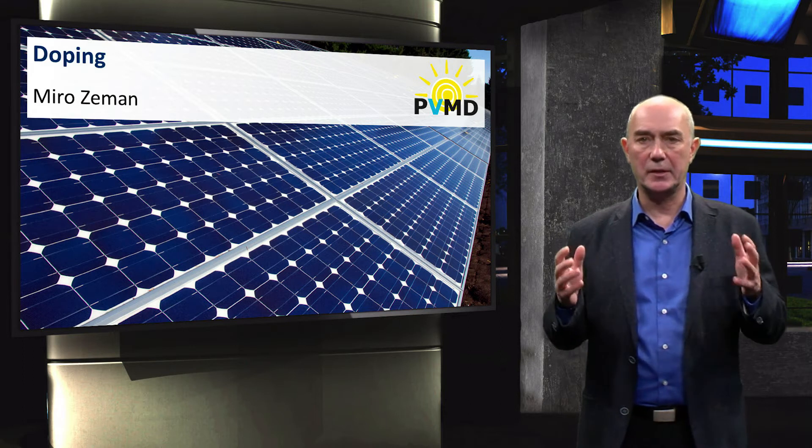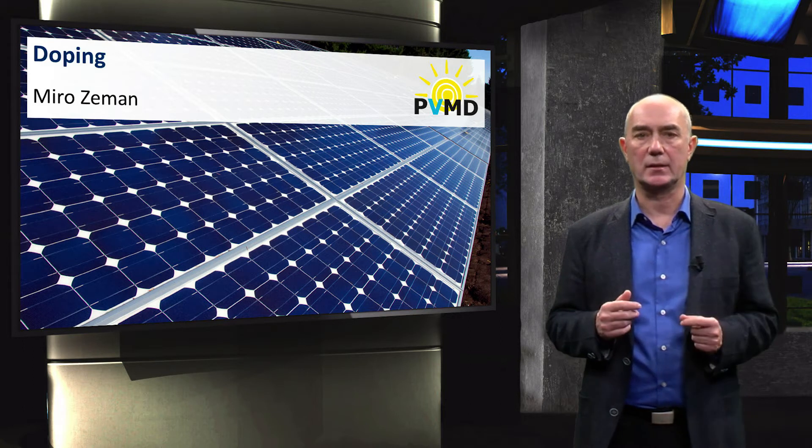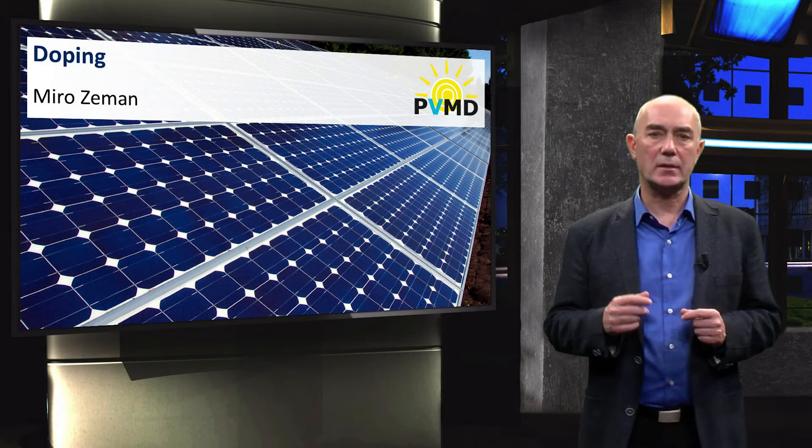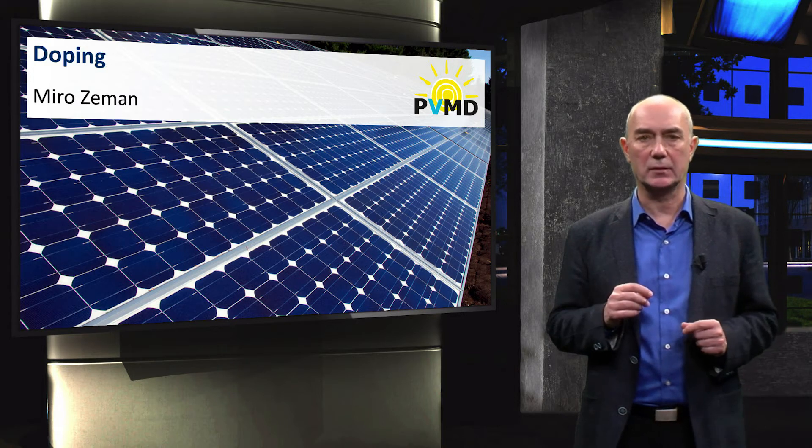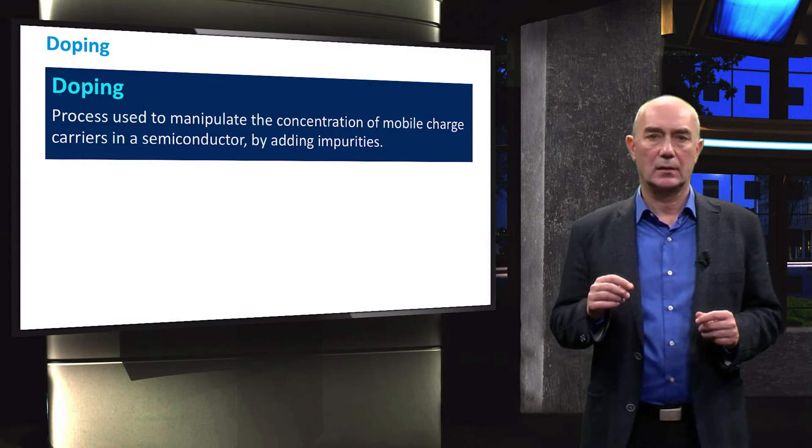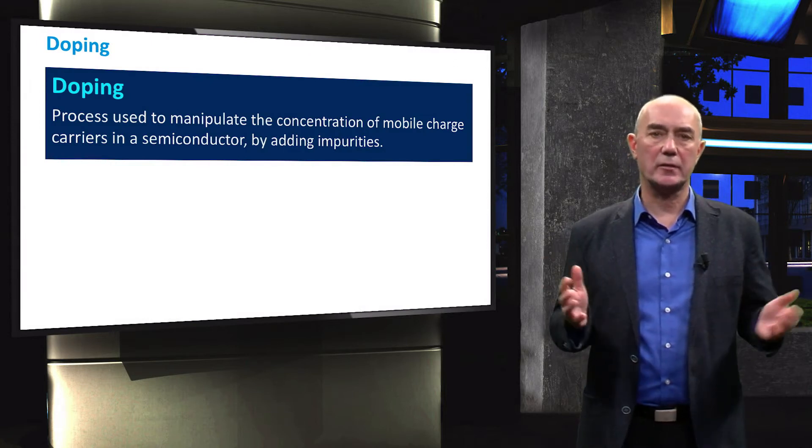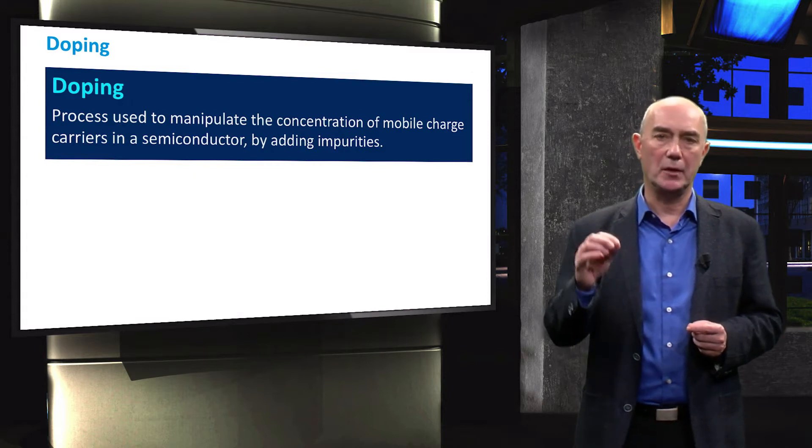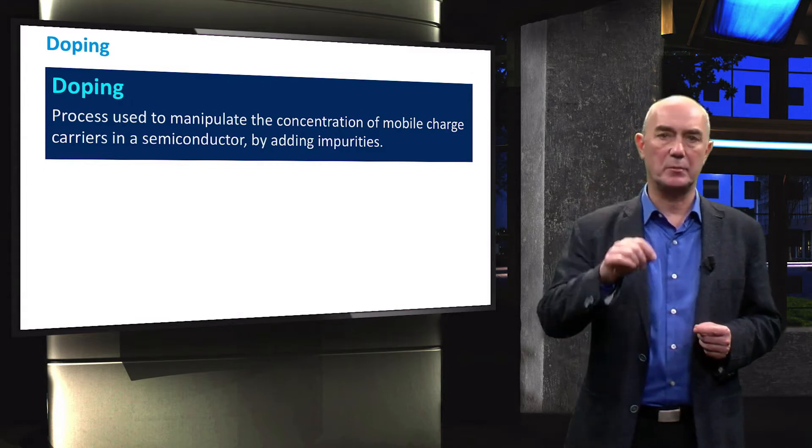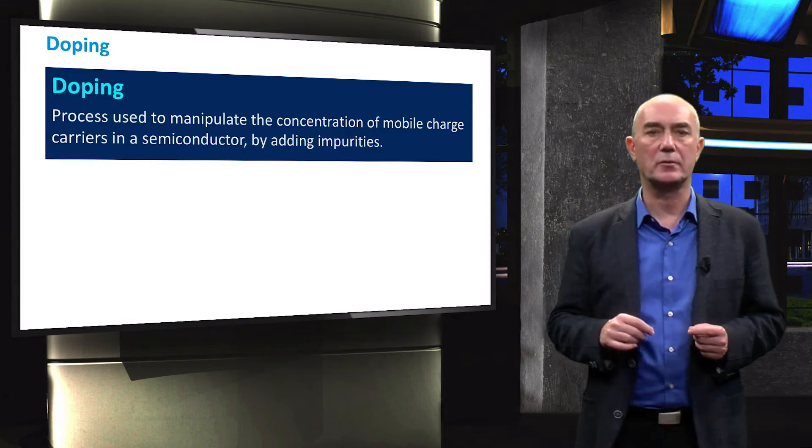In this video we will first introduce what doping is, then we will discuss how doping changes important material properties in semiconductors. The concentration of charged carriers in a semiconductor can be manipulated by doping the material. Doping means that we add impurities in a controlled way to the material.